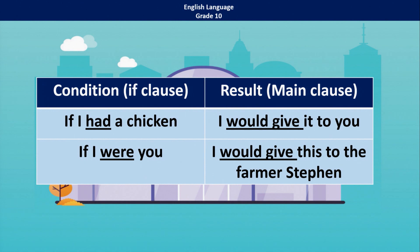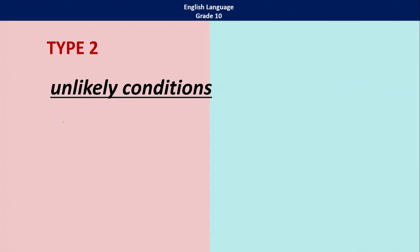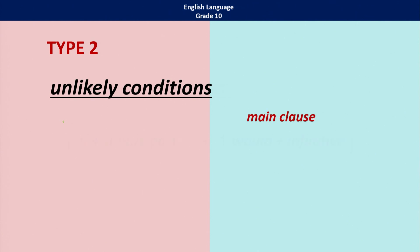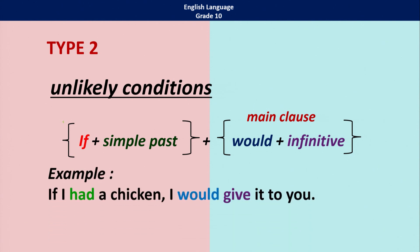This is the type we are going to discuss today. When are we using conditional type 2? Unlikely conditions — that means it would not happen. Look at the structure: if plus simple past, and the main clause: would plus infinitive, would plus the verb. Look at the example: 'If I had a chicken, I would give it to you.' But unfortunately, he did not have a chicken, so he could not give it. Unlikely conditions — not possible to happen.